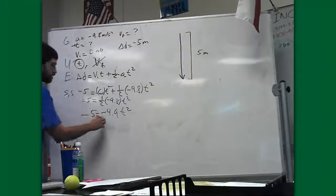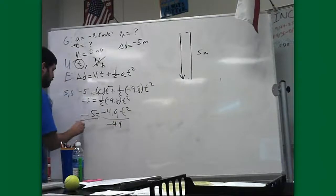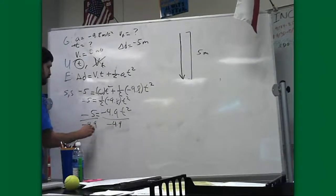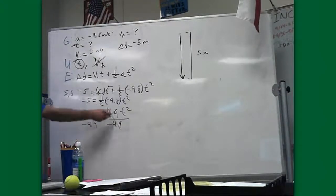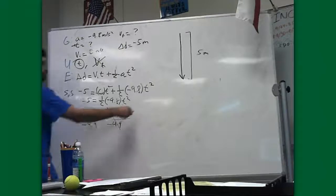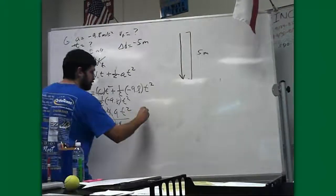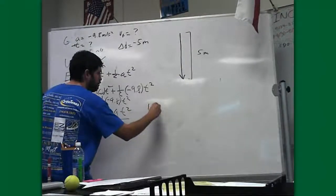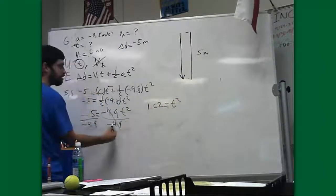Try to isolate T. The next step to do that is to divide by negative 4.9. 5 divided by negative 4.9 gives us a number. This cancels out, which is good because we want to isolate T. I'm going to move over here to have a little more space now. 5 divided by negative 4.9 gives us positive 1.02. And that's equal to T squared. We're still left with T squared over here.